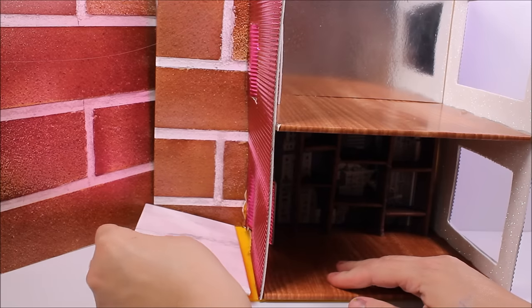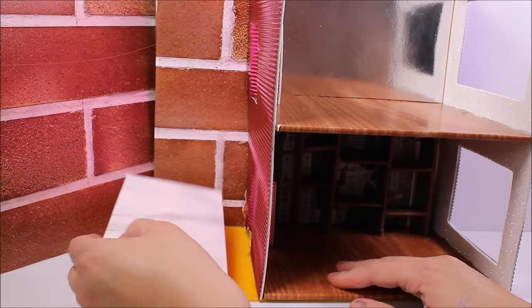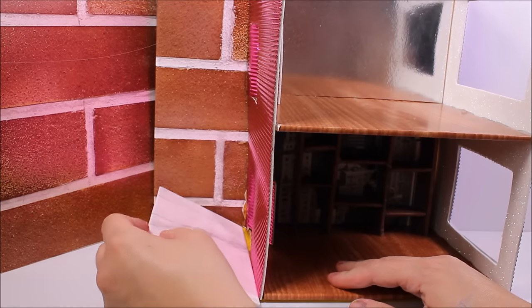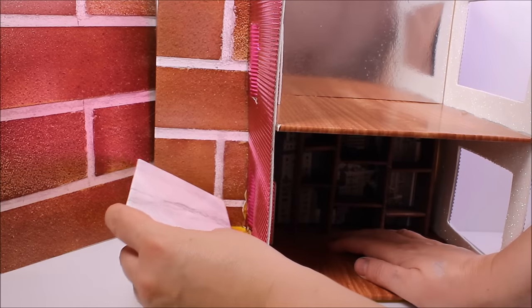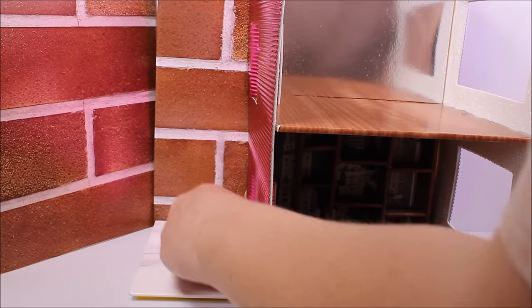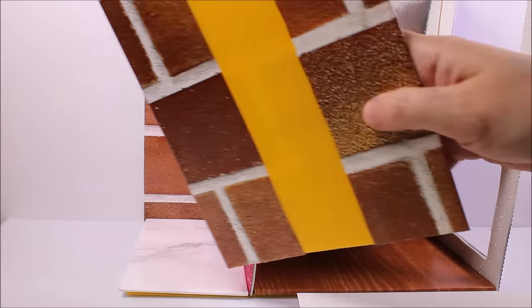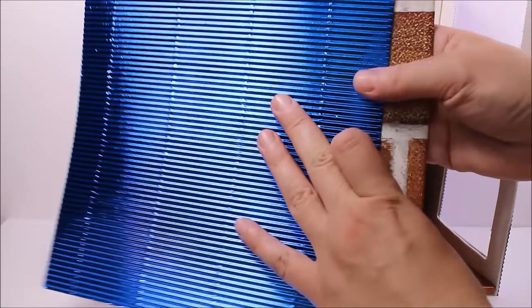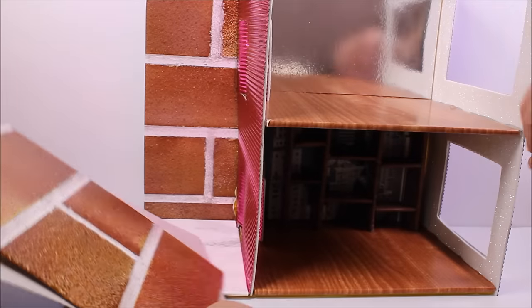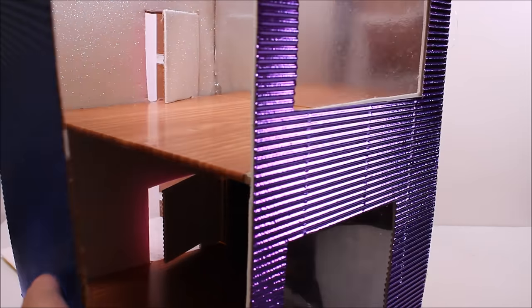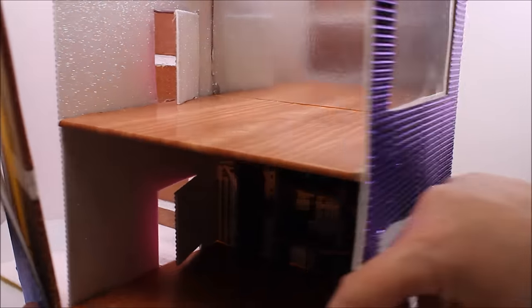So I have glue everywhere, and I'm gluing the wall. Now let's attach this part of the floor onto here. And on the external wall I'll glue this piece of paper like we did here, but I don't have the same color.